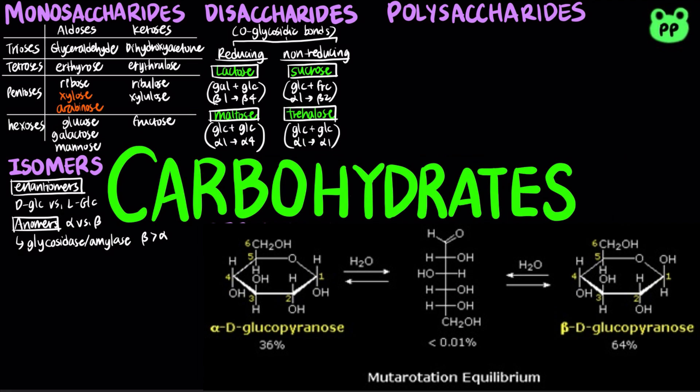Conversion between alpha- and beta-forms is known as mutarotation. Beta-glucopyranose is usually more stable than alpha-glucopyranose because all bulky substituents are in equatorial positions, resulting in less steric hindrance, and therefore it is more stable.